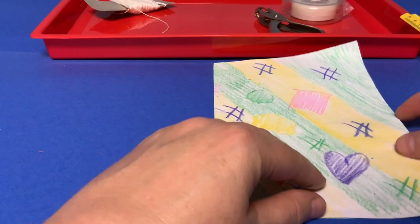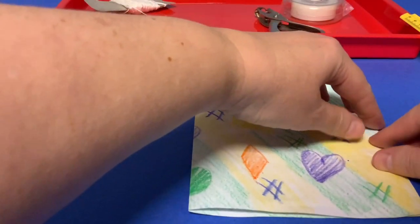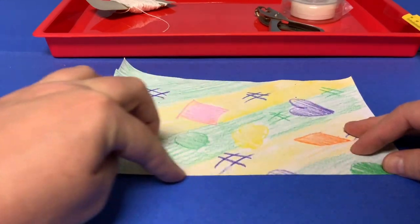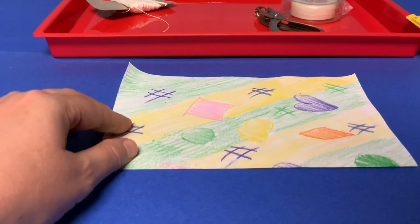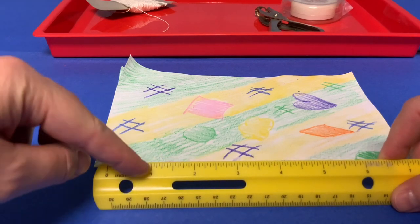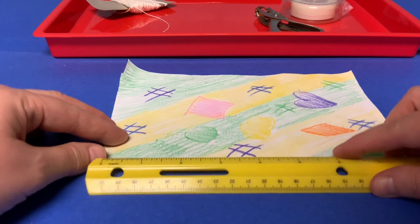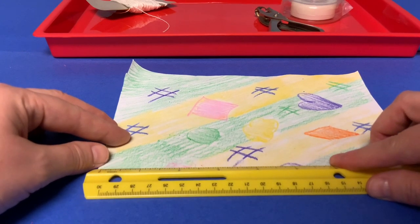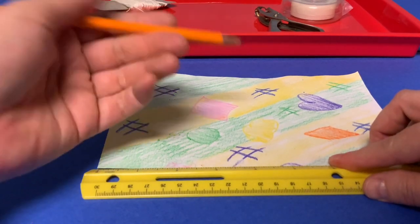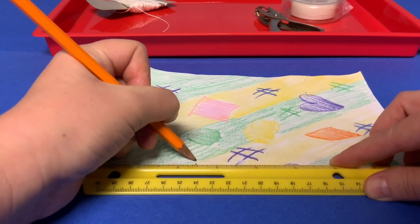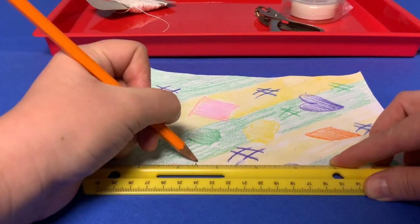Fold your paper in half. Line up the edges and make a crease at the bottom by pushing down the paper and sliding your finger along the edge. Place your ruler at the crease or the fold, then count off two and a half inches. Take a pencil and make a mark. I put a circle at the top of my mark so I knew that was the first mark that I made.